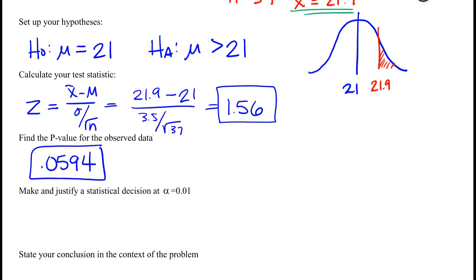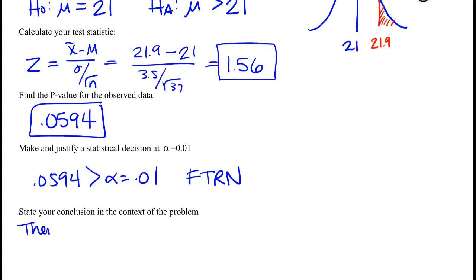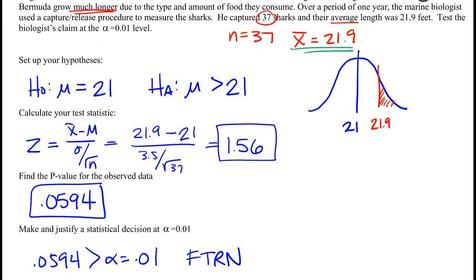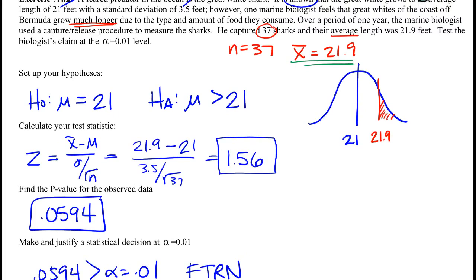We could even keep going. We can make and justify our decision. So at an alpha 0.01, our p-value is much larger than that, so we would fail to reject the null. This poor researcher has to write that there is not enough evidence to conclude...